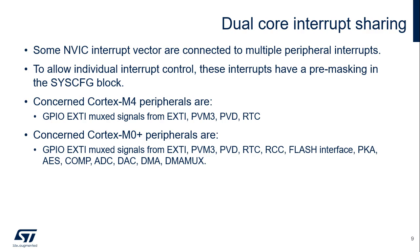In the dual-core STM32WL5 MCU, which embeds a Cortex-M4 core and a Cortex-M0 Plus core, the peripherals' interrupts are connected to both cores. To prevent unwanted interruptions, interrupts mapped on a single NVIC entry can be pre-masked in the System Configuration Controller, or SysConfig. The SysConfig interrupt mask registers ensure that interrupt sources are only forwarded to the wanted CPU — Cortex-M4 or Cortex-M0 Plus — and the impacted peripherals are listed for each CPU.